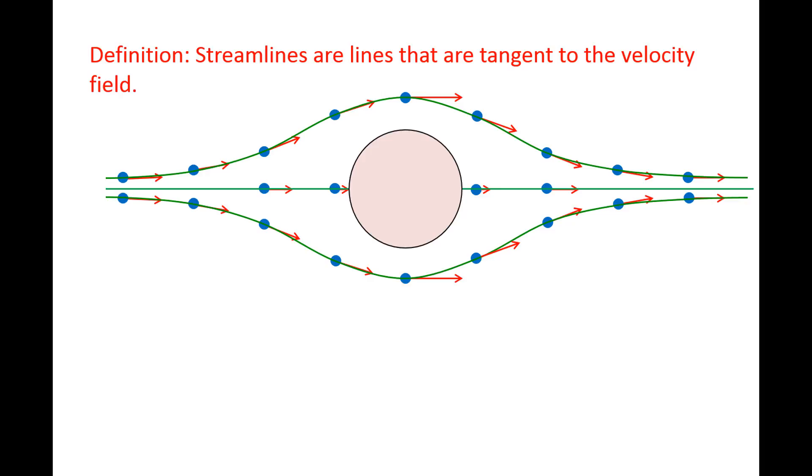Let's look at the velocity vector of an individual fluid element and decompose the velocity into its y component, lowercase v, and its x component, lowercase u. We will write the ratio of lowercase v to lowercase u and substitute dy dt for lowercase v and dx dt for lowercase u. The dt's cancel out, and we are left with dy dx.